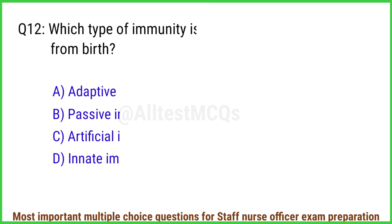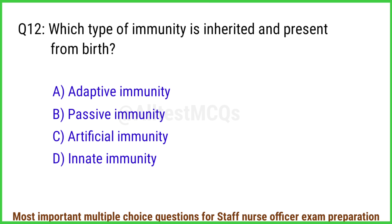Q12. Which type of immunity is inherited and present from birth? The right answer is option D: Innate immunity.